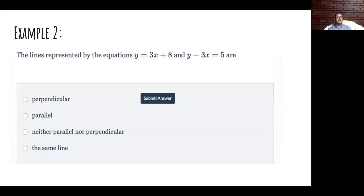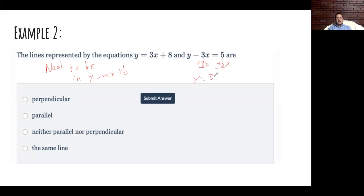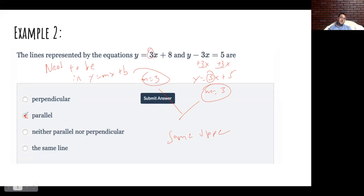Let's look at another type of example. This says: the lines represented by these equations — a little variation where you are comparing. You want them in slope-intercept form. Moving 3x over gives y equals 3x plus 5. Looking at slopes: this one has m of 3, this one has m of 3. They have the same slope — and what has the same slope? Parallel. If you get reciprocals that are not opposite, that would be neither parallel nor perpendicular. If you had opposite reciprocals, that would be perpendicular.